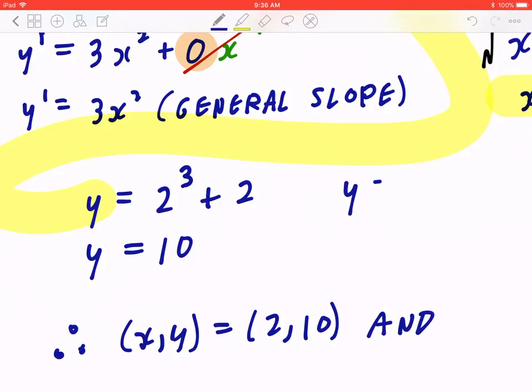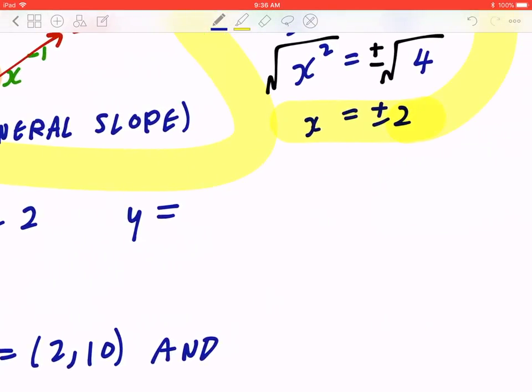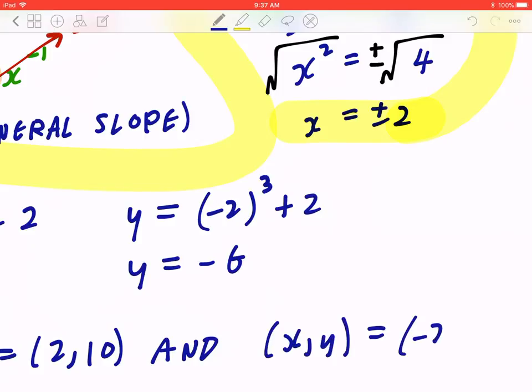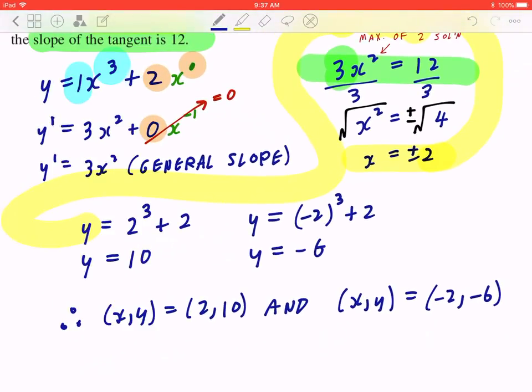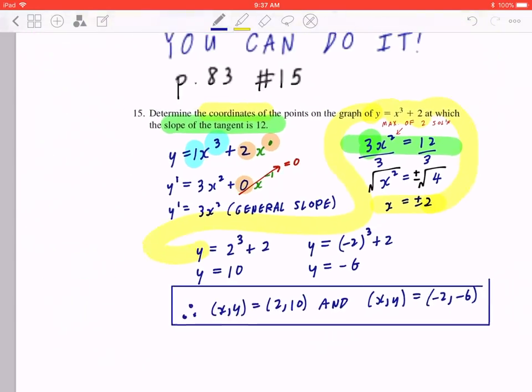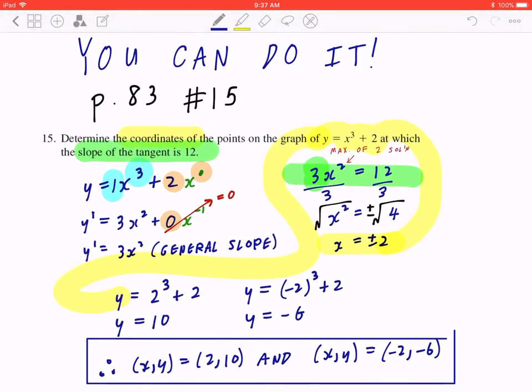Likewise, if you look at the second case, you plug in x to be negative 2 back into y, so negative 2 cubed plus 2. That's negative 8 plus 2, which is negative 6. Therefore, the second coordinate is going to be (-2, -6). I hope this makes sense.